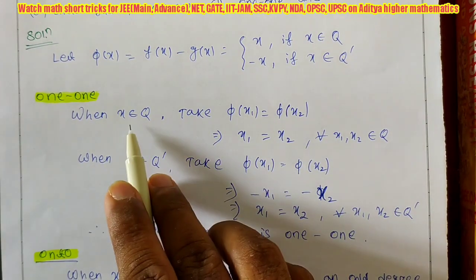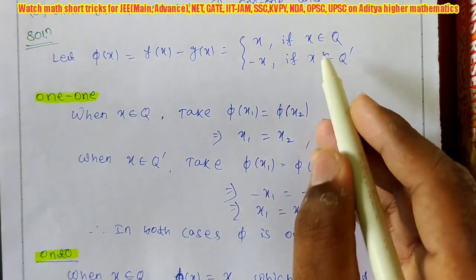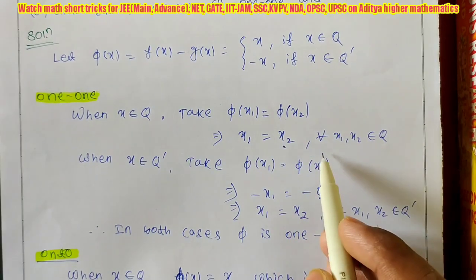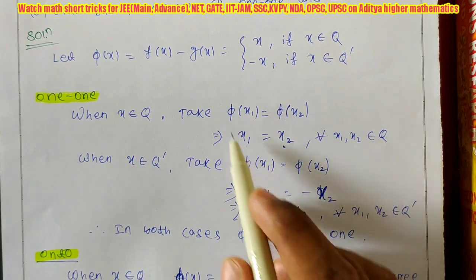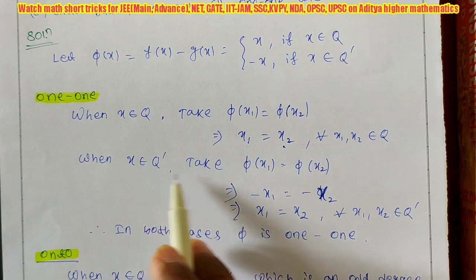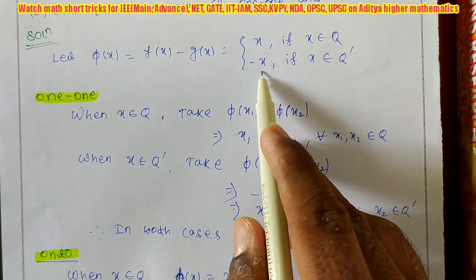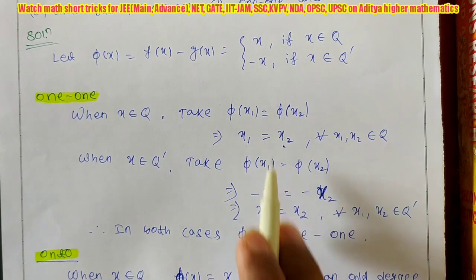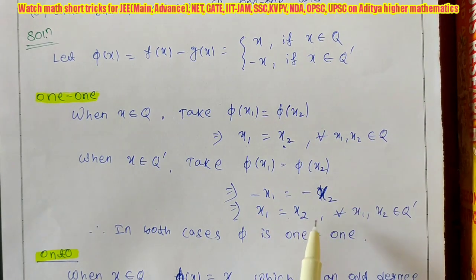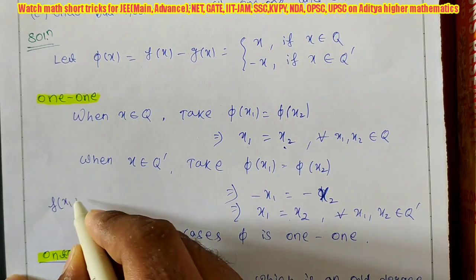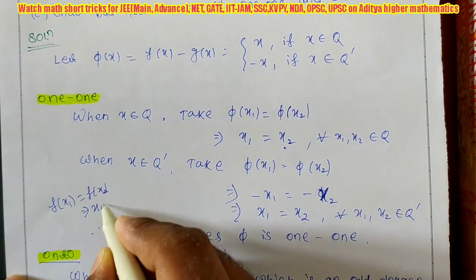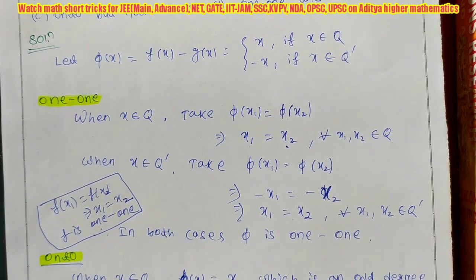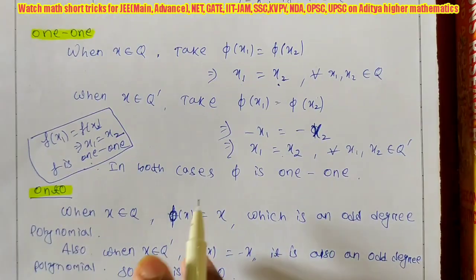For x ∈ Q (rational case), φ(x) = x. If φ(x₁) = φ(x₂), then x₁ = x₂, which satisfies the one-to-one condition. For x ∈ Q' (irrational case), φ(x) = -x. If φ(x₁) = φ(x₂), then -x₁ = -x₂, which gives x₁ = x₂. So in both cases, φ(x₁) = φ(x₂) implies x₁ = x₂, meaning φ is one-to-one.